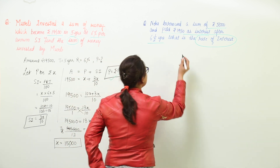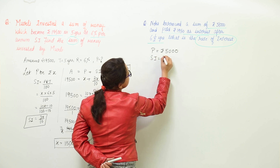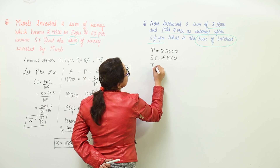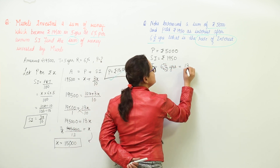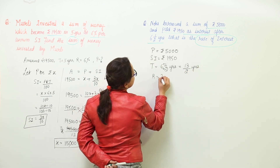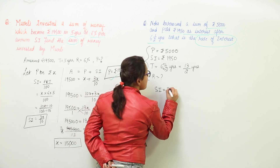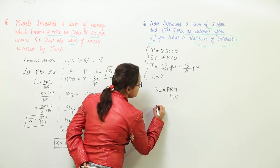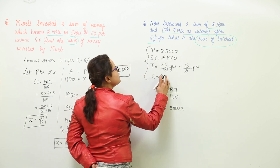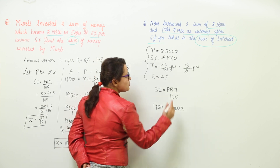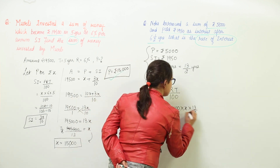Let us write down all values given. Principal = rupees 5,000. Interest = rupees 1,950. Time = 6½ years = 13/2 years. We have to find the rate. Using the formula simple interest = PRT/100, which contains all four quantities, let us assume rate = x percent per annum. Placing values: 1,950 = 5,000 × x × (13/2) / 100.